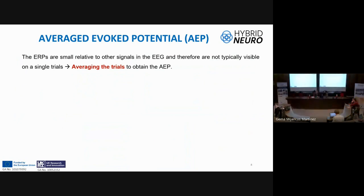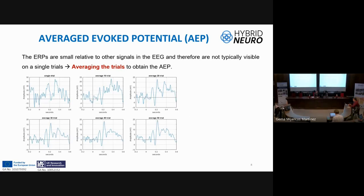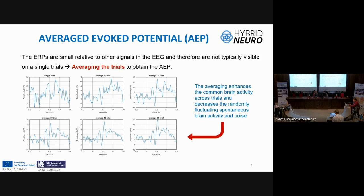The EEG signal has low amplitude and noise during recording, which affects visualization of events. However, when we average these potentials, the tendency becomes clear and the noise, if random, and background activity is attenuated. We can see a single trial, then averages of 10, 20, 30, 40, and 50 trials. The last plots are more similar and do not change much. Averaging can, however, change the common brain activity across trials.